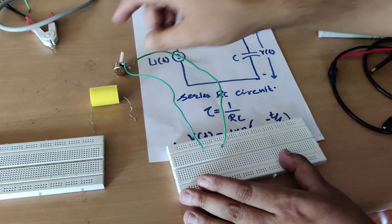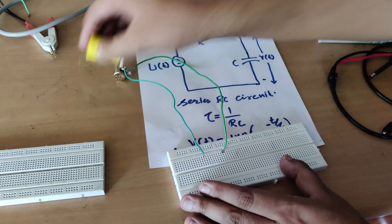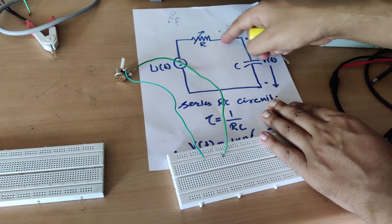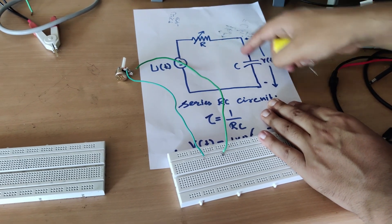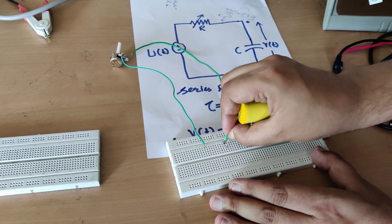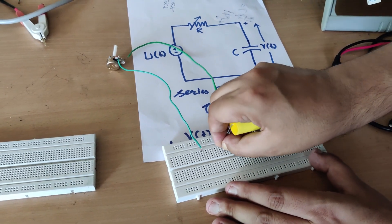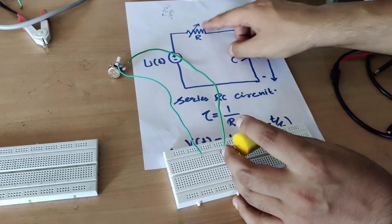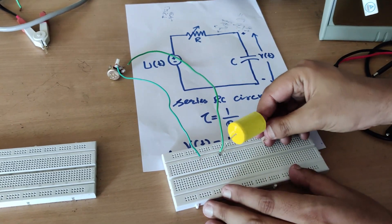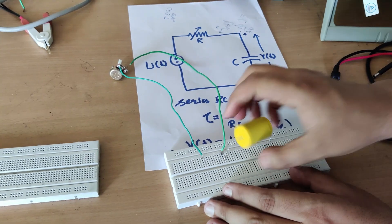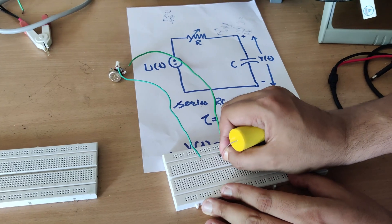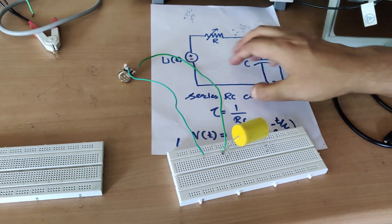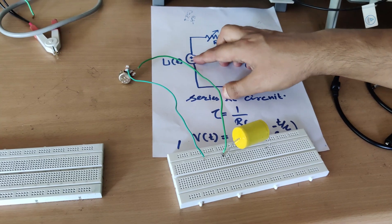Now I will connect the capacitor. This is the capacitor — I will connect the capacitor in series. You can see this terminal and this terminal are connected, so I will connect it here. This terminal has come; now another terminal I will connect somewhere here. So the RC circuit is here — you can see the RC circuit.